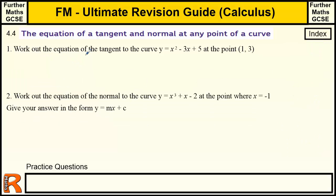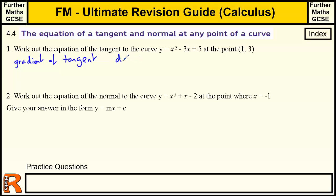Question one: work out the equation of the tangent to the curve y equals x squared minus 3x plus 5 at the point (1, 3). This is pretty standard — the same thing over and over again. We need to find the gradient of the tangent first. To find the gradient we need to differentiate the curve function. So dy by dx: the differential of x squared is 2x, the differential of minus 3x is minus 3, the differential of 5 is nothing. So that's our gradient function.